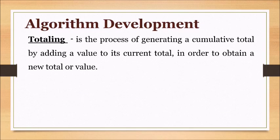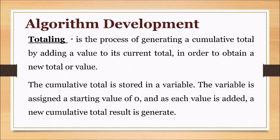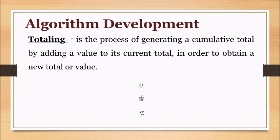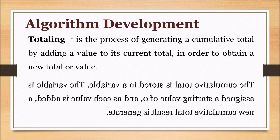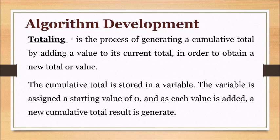Totaling is the process of generating a cumulative total by adding a value to its current total in order to obtain a new total value. The cumulative total is stored in a variable, which is assigned a starting value of zero, and as each value is added a new cumulative total result is generated.